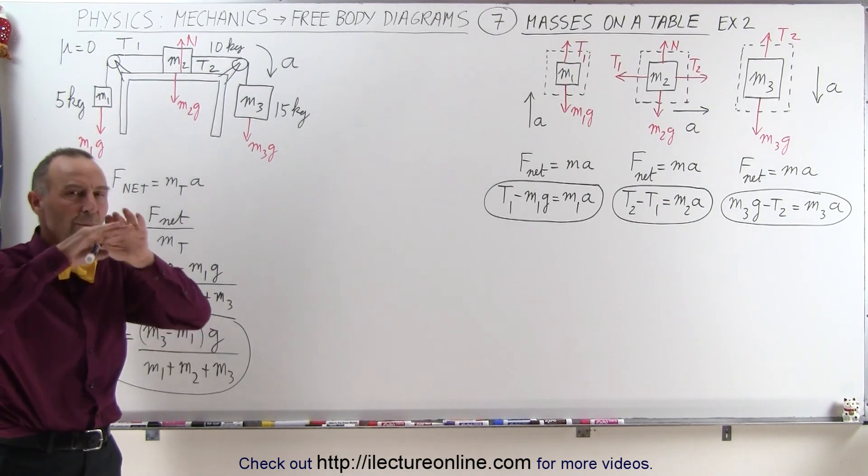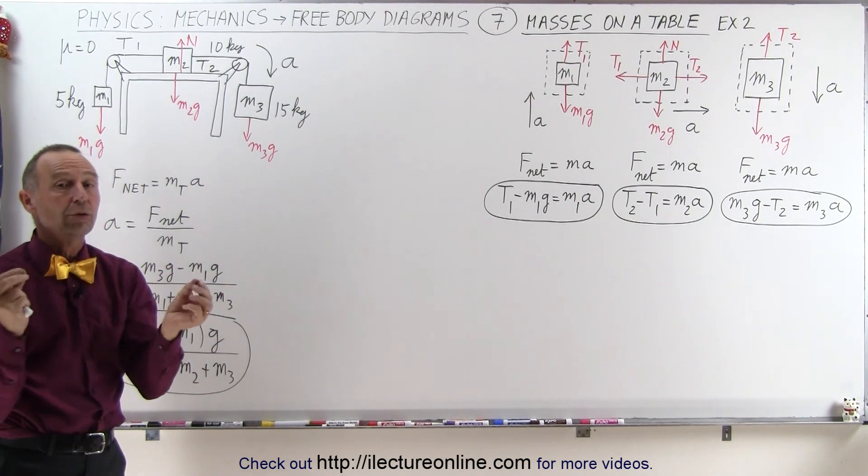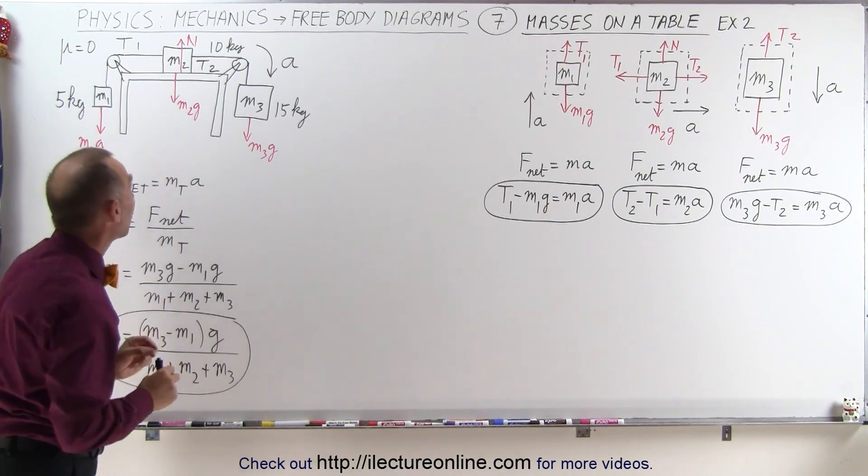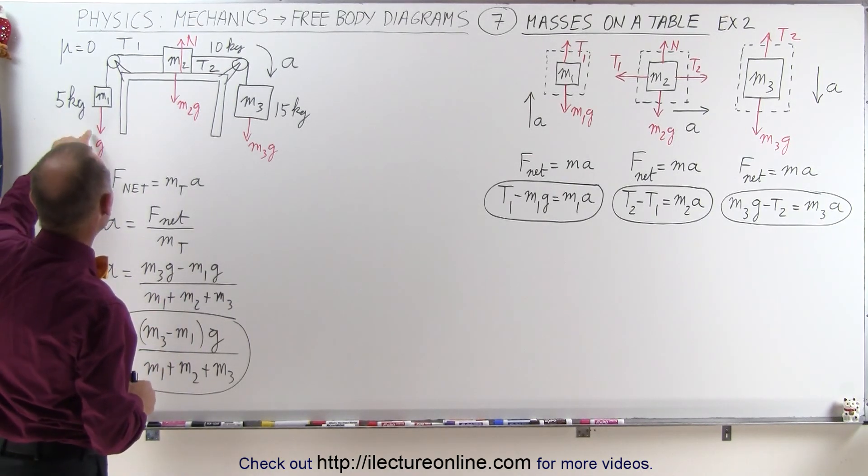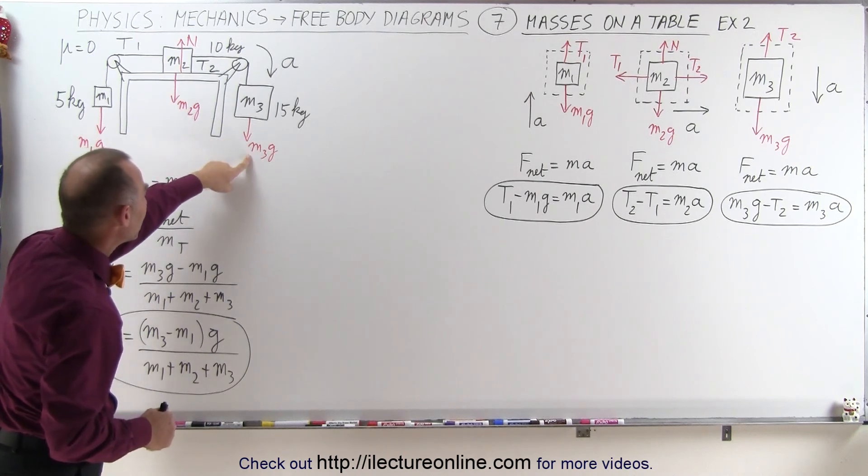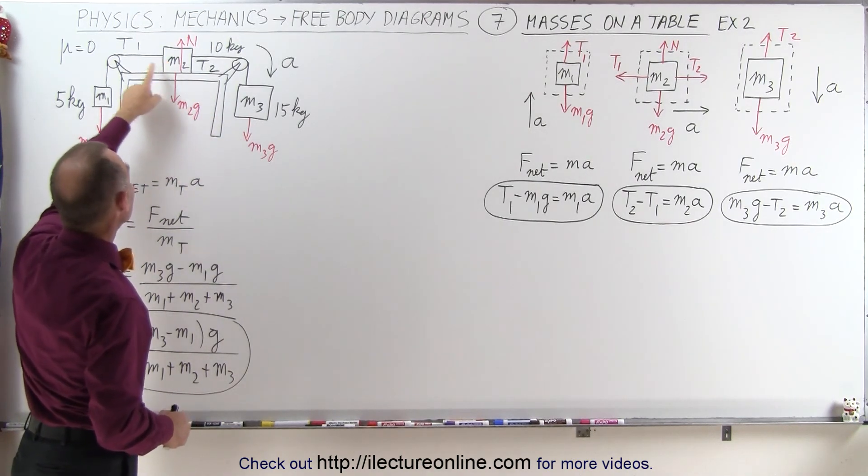But if we use the method where we consider the entire system and all of the forces acting on the system, we recognize only four forces: m1g, m2g, m3g, and the normal force pushing back.